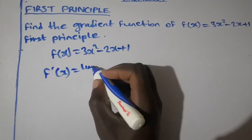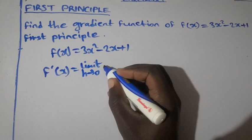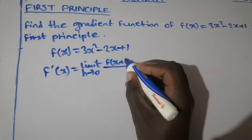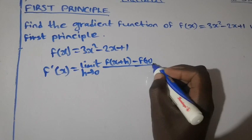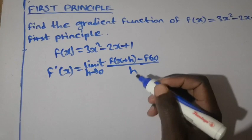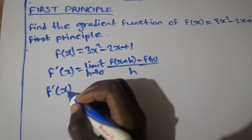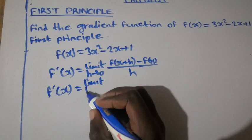So f prime of x equals the limit as h approaches 0. This is the formula we are going to use.